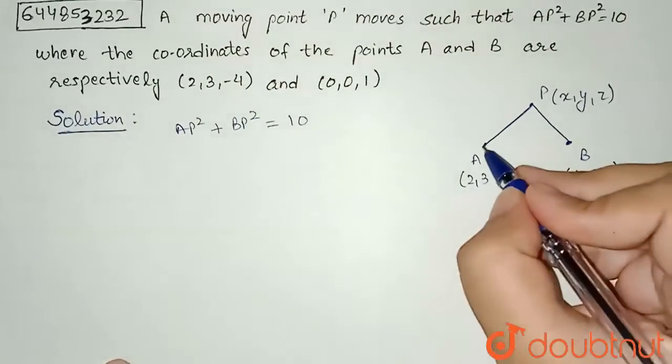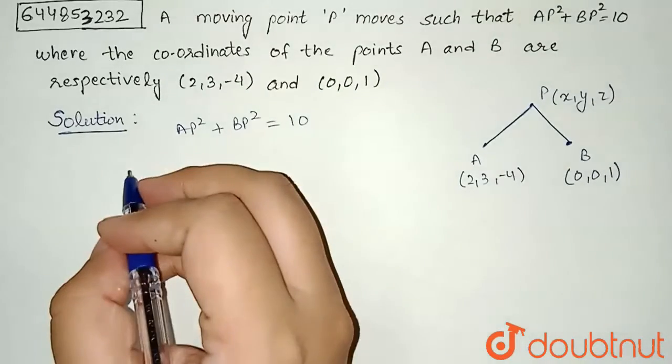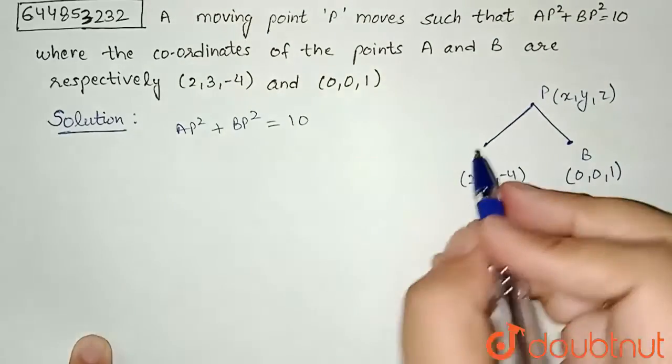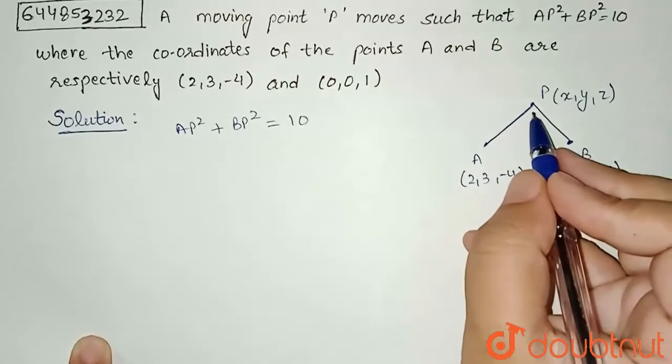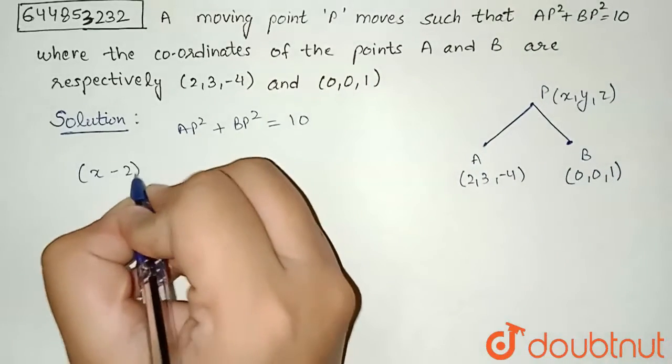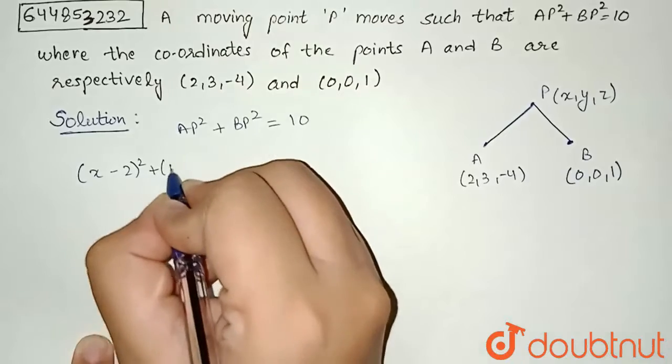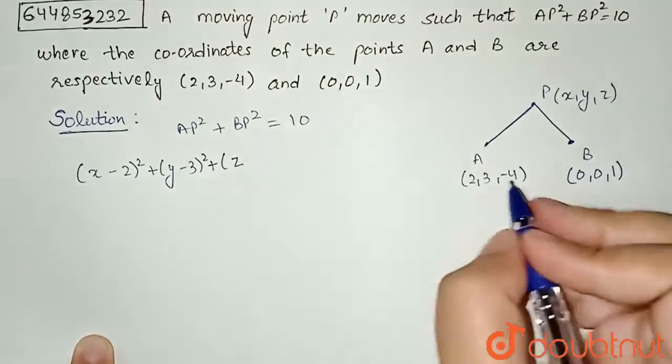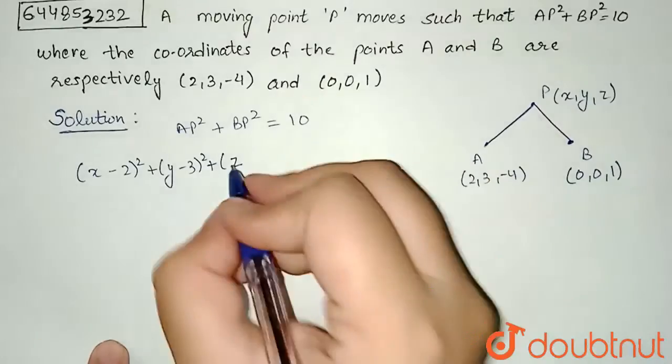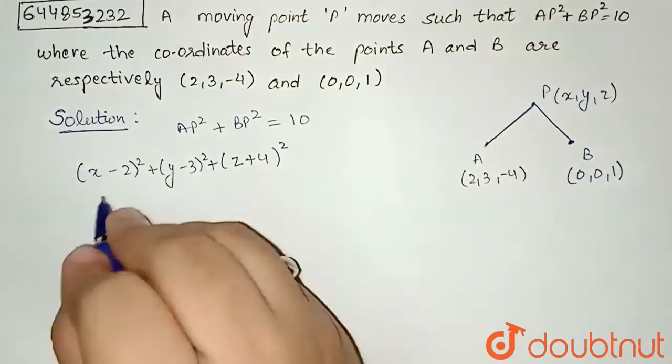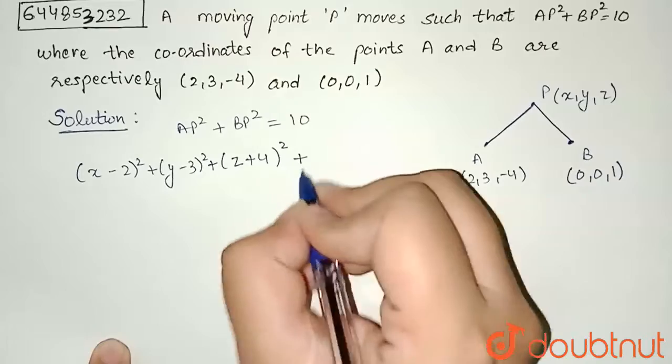By using distance formula we can find the distance between two points. According to the distance formula, I am writing the value of AP² that will be (x - 2)² + (y - 3)² + (z + 4)², where minus minus becomes plus. This is the value of AP².